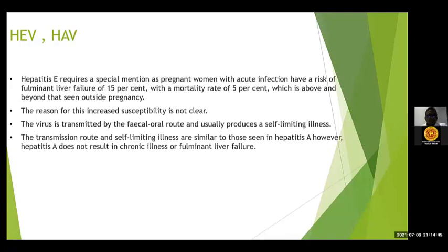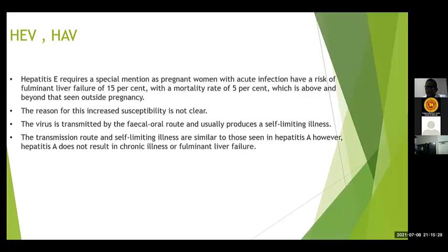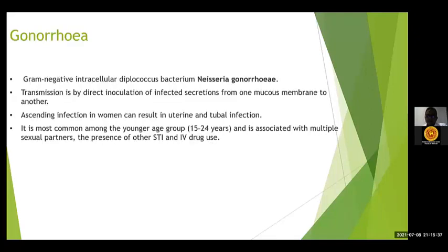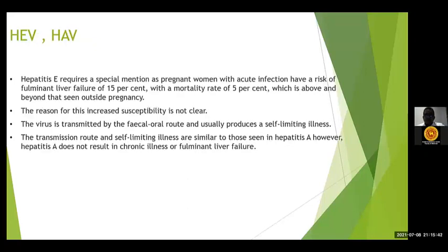Hepatitis E requires special mention: pregnant women with acute hepatitis E infection have a risk of fulminant liver failure of 15%, with a mortality rate of 5%, which is not seen outside of pregnancy — the reason for this increased susceptibility is not clear. The virus is transmitted by the fecal-oral route and usually produces a self-limiting illness. In contrast, hepatitis A does not result in chronic illness or fulminant liver failure, even in pregnancy. These are the main viruses that cause severe maternal or fetal morbidity during pregnancy.